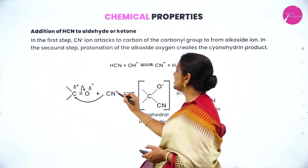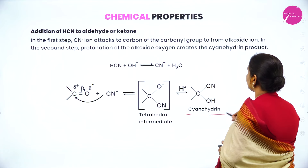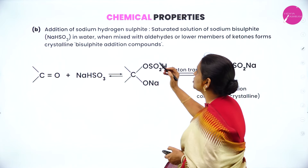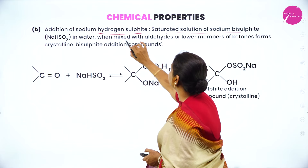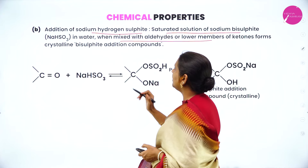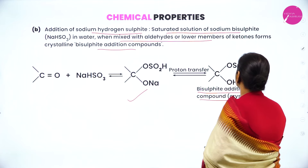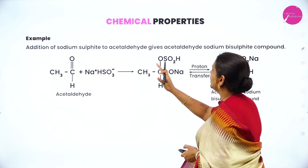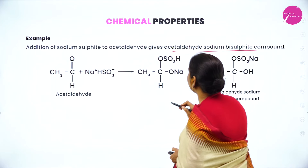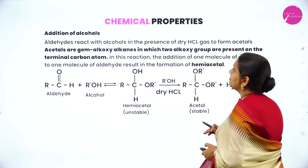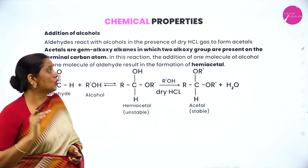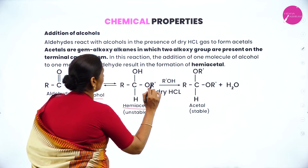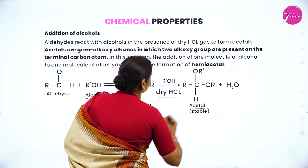Addition of hydrogen cyanide: when cyanide is added to aldehydes and ketones, they form an addition product called cyanohydrin. Addition of sodium hydrogen sulfite: saturated solution of sodium bisulfite in water, when mixed with aldehydes and lower members of ketones, forms a crystalline addition product called bisulfite addition product. Higher ketones do not undergo this reaction because of steric hindrance. For example, acetaldehyde and acetone give their respective sodium bisulfite addition products.